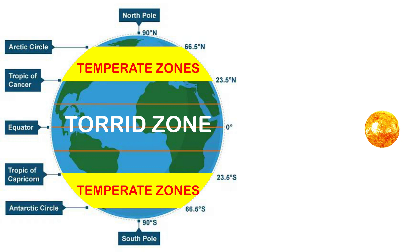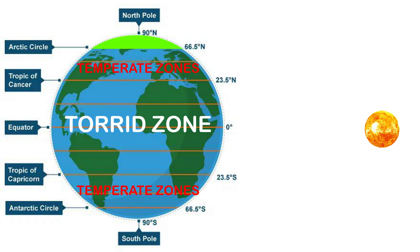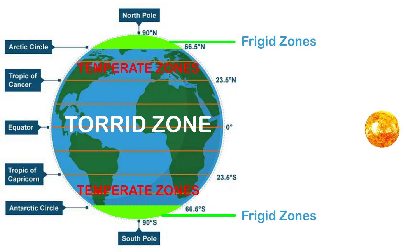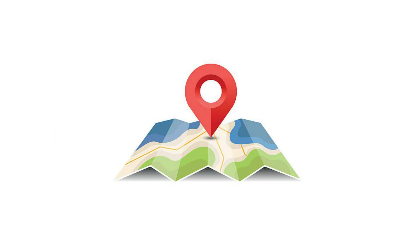Areas lying between the Arctic Circle and the North Pole in the Northern Hemisphere, and the Antarctic Circle and the South Pole in the Southern Hemisphere, are very cold. Here the sun does not rise much above the horizon, so its rays are always slanting and provide less heat. These are therefore called the Frigid Zones.